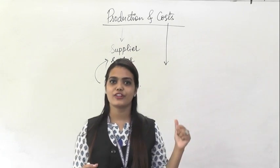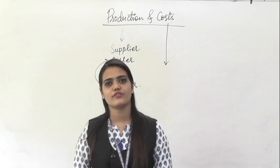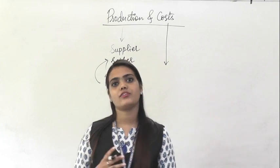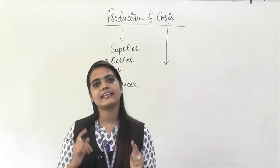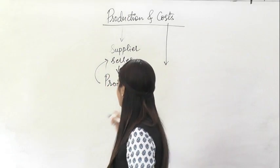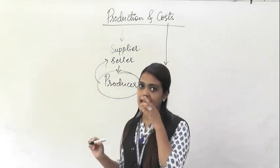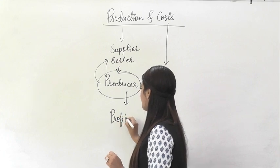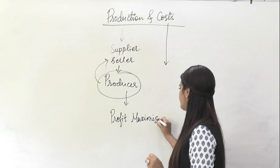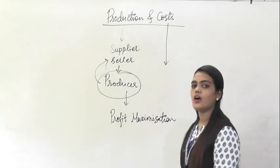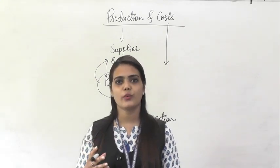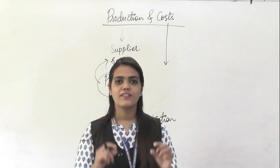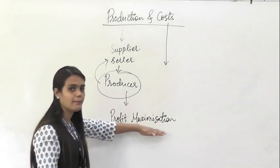It is very obvious that for this chapter, we are going to enter into the shoes of a producer. We are going to think like a producer, have the aim and behavior of a producer. What is the aim of a producer? The aim of a person who is producing and selling goods in the market is nothing but profit maximization. When asked what is the aim of a producer, the most accurate term is profit maximization.